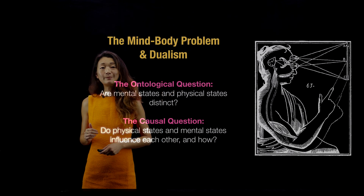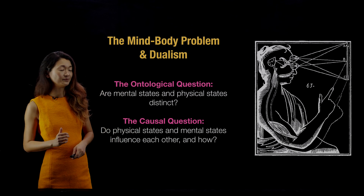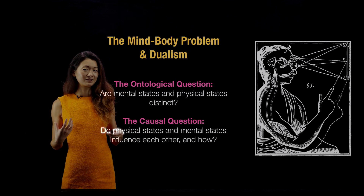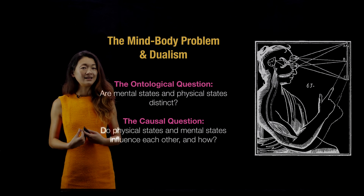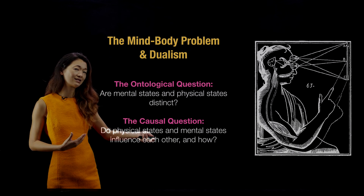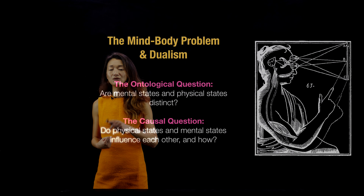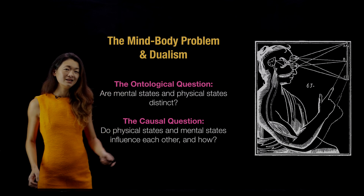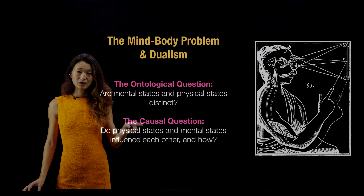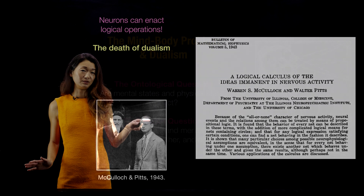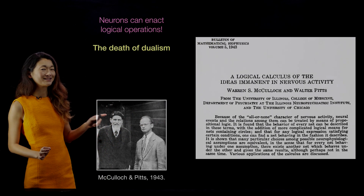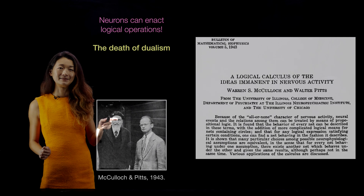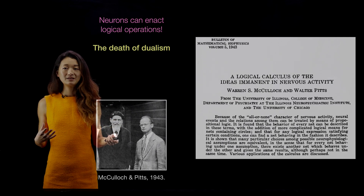This leads us back to the mind-body problem and dualism. For hundreds and thousands of years, philosophers have thought about whether your mind and self are different from the physical instantiation of your body — the ontological question of whether mental states and physical states are distinct, and the causal question of how they influence each other. The process of summation and thresholding we described essentially killed dualism. This happened through the seminal 1943 paper by McCulloch and Pitts, who were the first to articulate that the activity of neurons can be thought of as a computational logical machine.